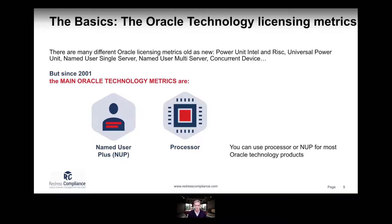We've gone through power units, universal power units, named users single server, named users multi-server, and concurrent device licensing. You can still see some of these licensing metrics out there, and you can still today migrate or upgrade to the most current licensing metrics available.